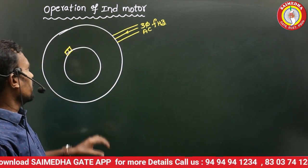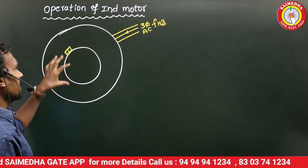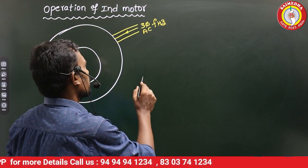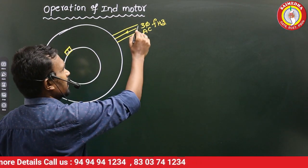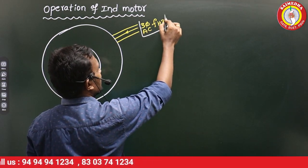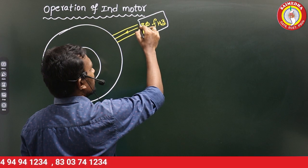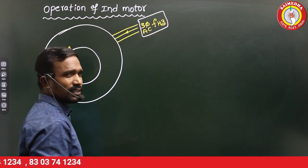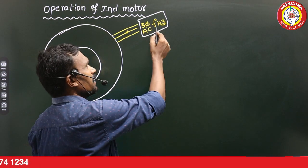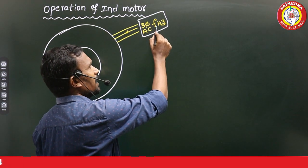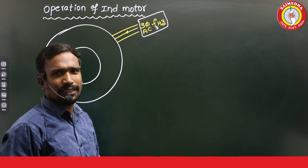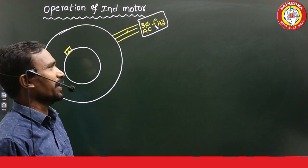Let's see, for example, this is my three-phase induction motor. This three-phase induction motor has a supply — three-phase AC supply with frequency F, also written as Fs. This is the supply frequency or stator frequency.